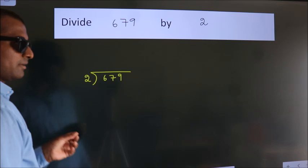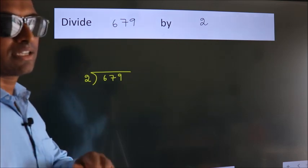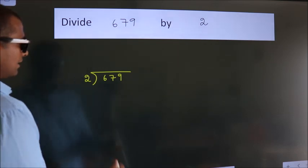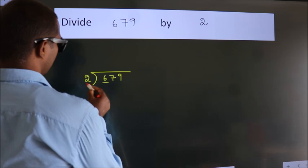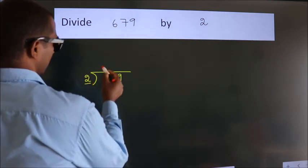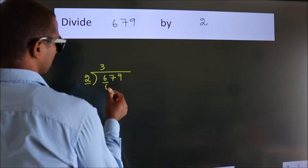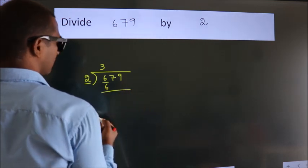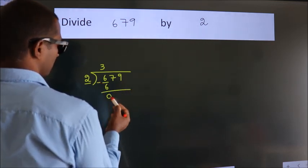This is your step 1. Next, here we have 6, here 2. When do we get 6? In the 2 times table, 2 times 3 is 6. Now we should subtract. We get 0.